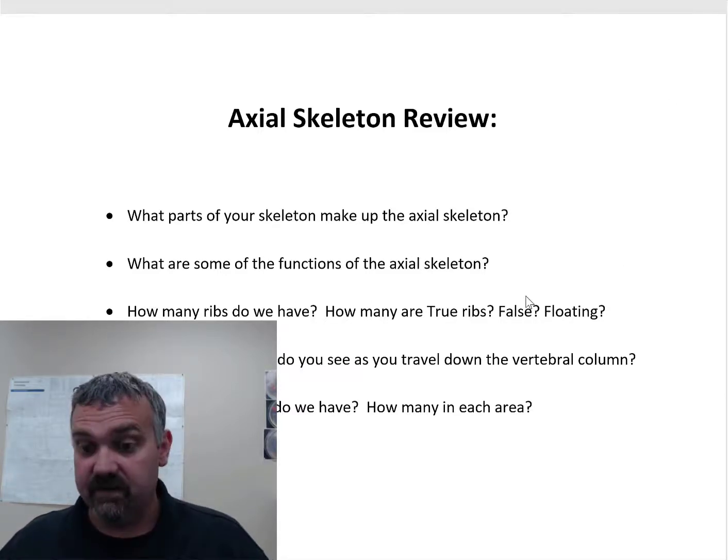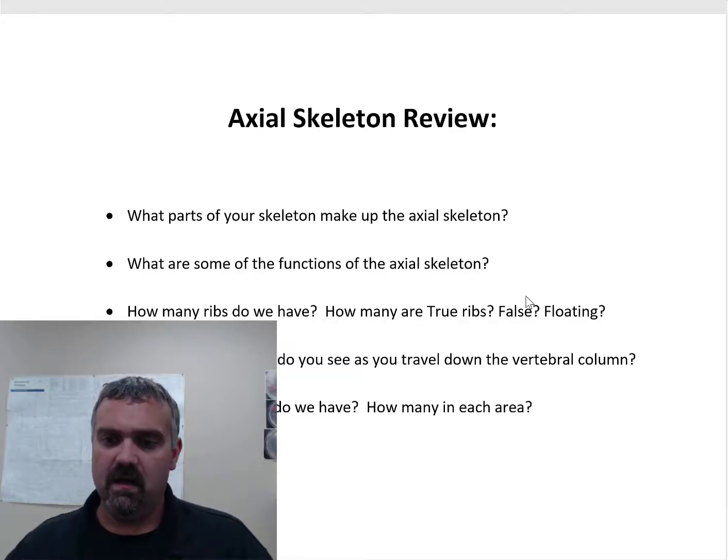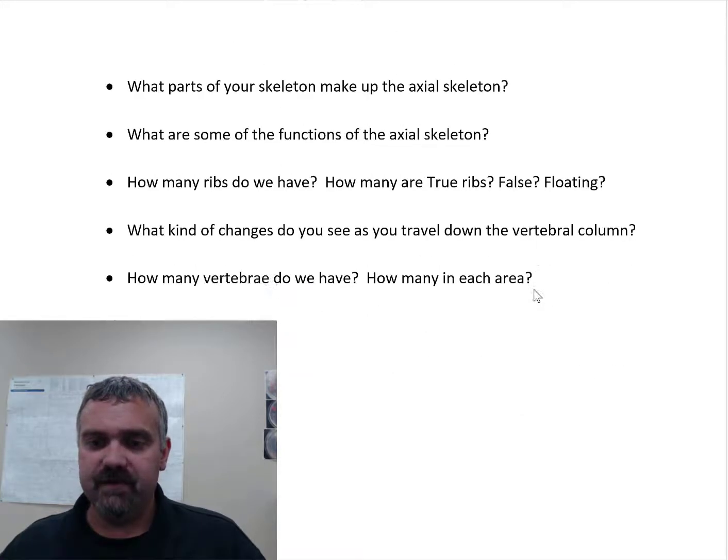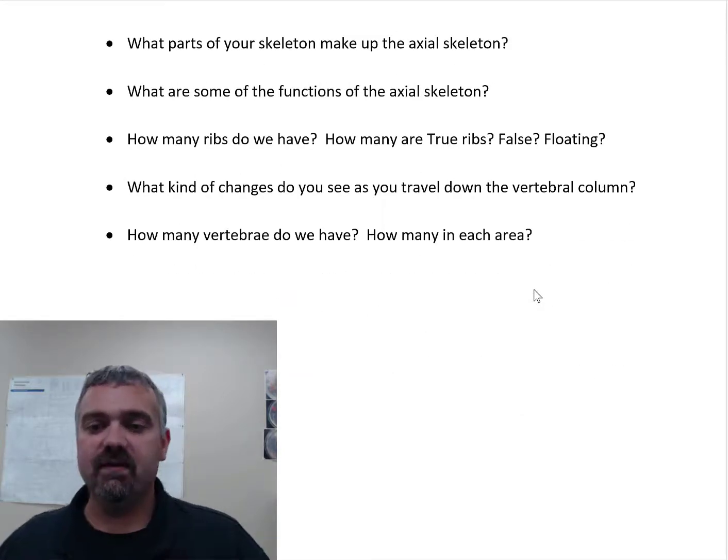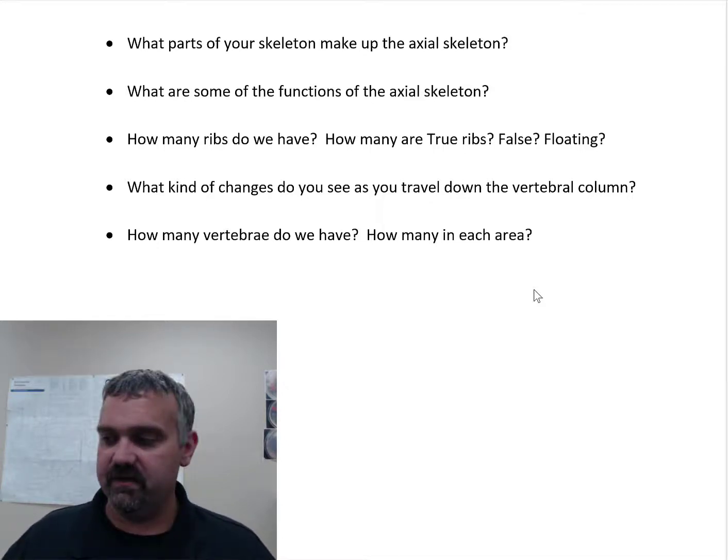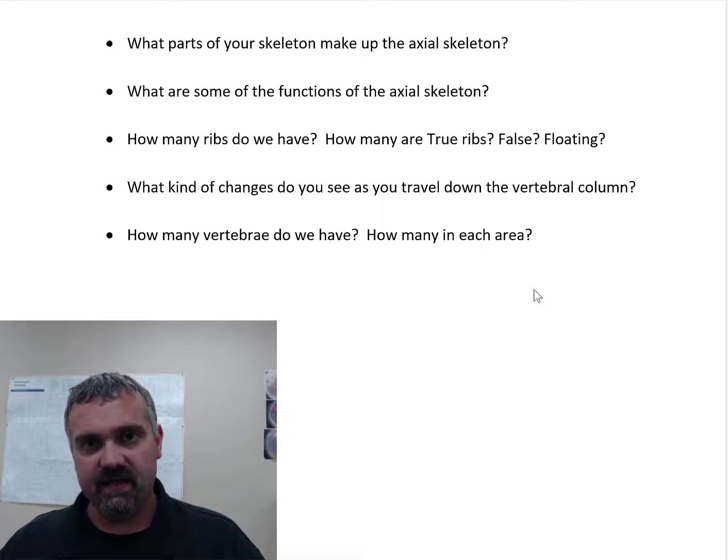So not a lot to talk about here. There's a ton to know. I mean, there's 206 bones and all manner of different prominences and features on them, but I'm not going to cover them here. Okay, so let's get started. What parts of your skeleton make up the axial skeleton? So your bones are broken up into two groups, the axial skeleton and your appendicular skeleton.